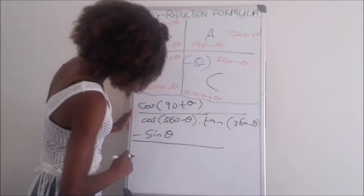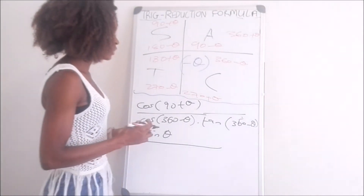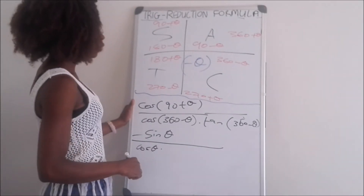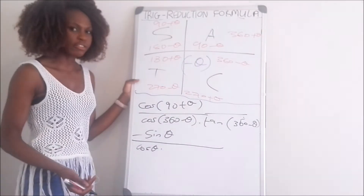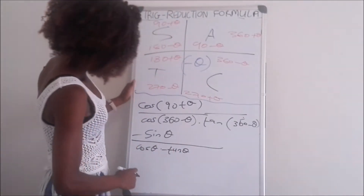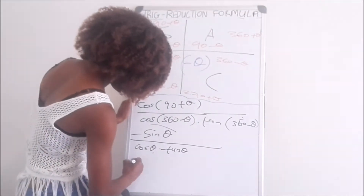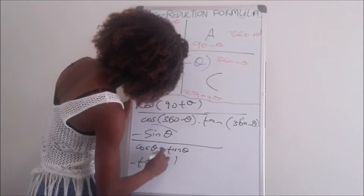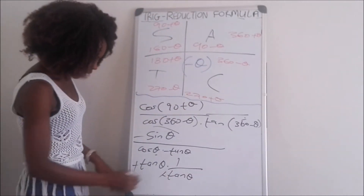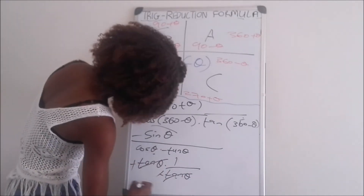Divided by: for cos(360 minus theta), since 360 minus theta and cos theta are in the same quadrant, the answer is positive cos theta. Then tan(360 minus theta) — tan is in a different quadrant there, so the answer is negative tan theta. Now, since sine divided by cos equals tan, we have negative sine theta over cos theta, which gives negative tan theta. Multiplying: the negatives cancel, and tan cancels, leaving us with 1.